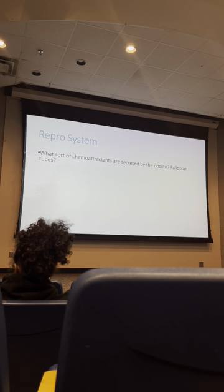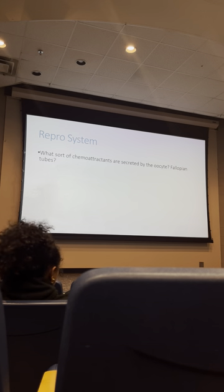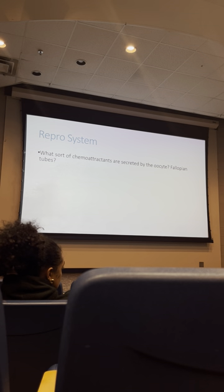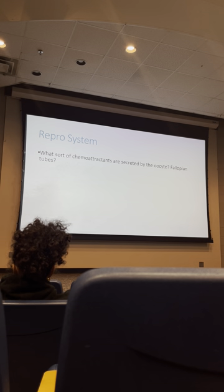Inside the fallopian tubes, the egg releases prostaglandins as a chemoattractant to help sperm find it. The fallopian tubes also make a protein called alluren. Sperm cells are sensitive to both prostaglandins and alluren, allowing them to find the egg.